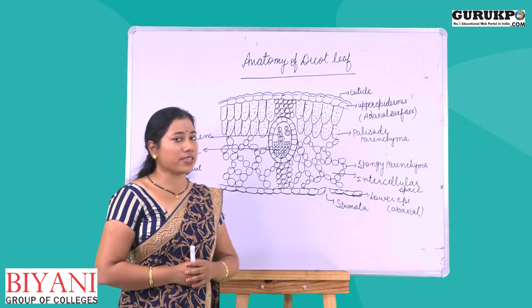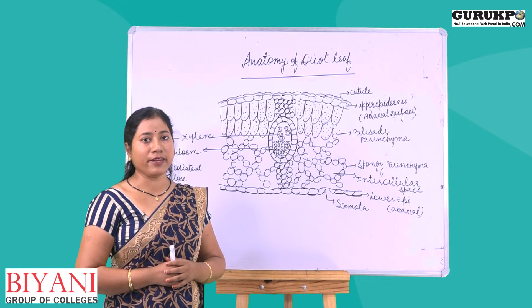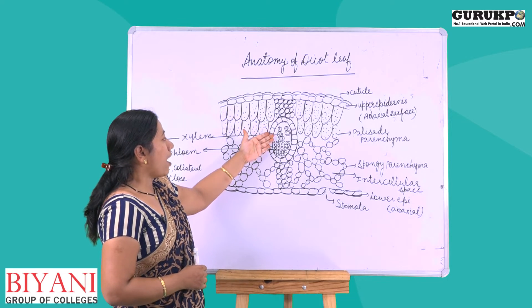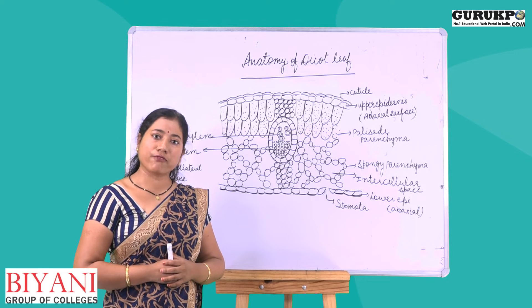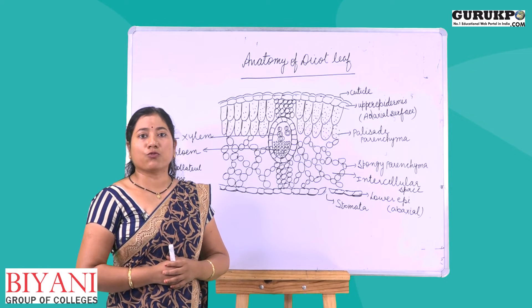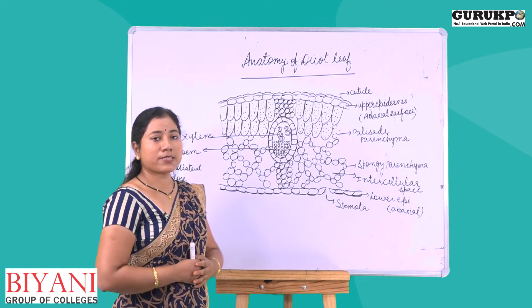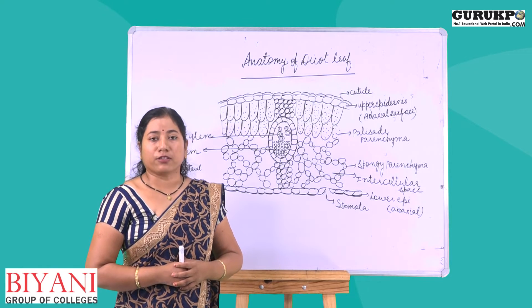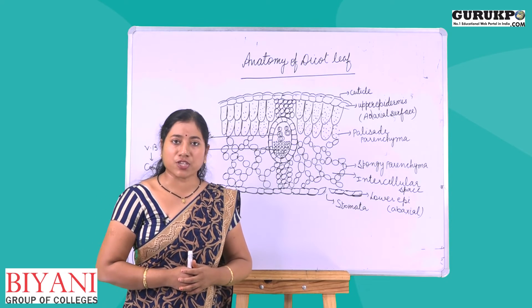There is no cambium ring present between the xylem and phloem, so no secondary growth is possible in leaves. Xylem is made up of xylem parenchyma, xylem tracheids, and xylem fibres, and its main function is to transport water. Phloem is made up of companion cells, sieve cells, and phloem parenchyma, and its main function is to transport food.